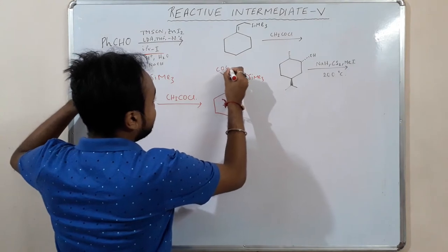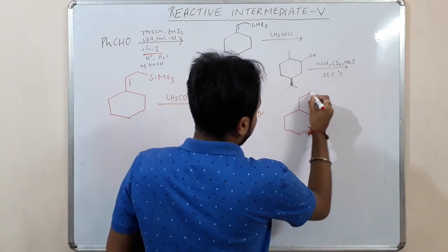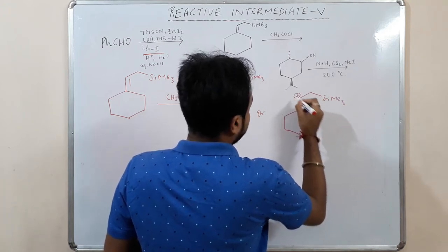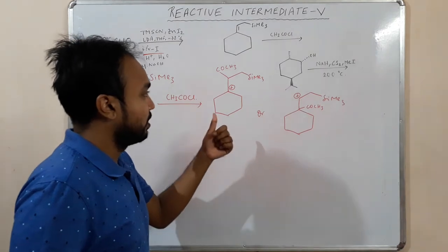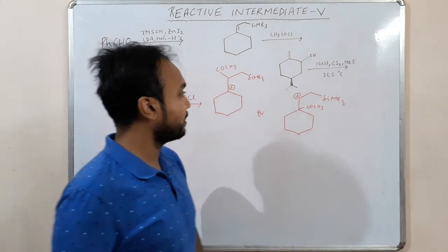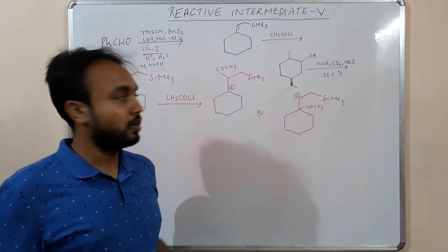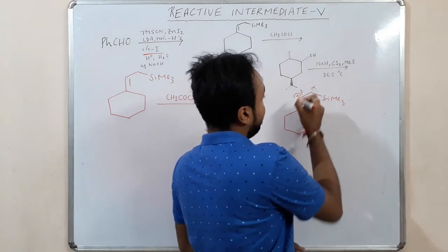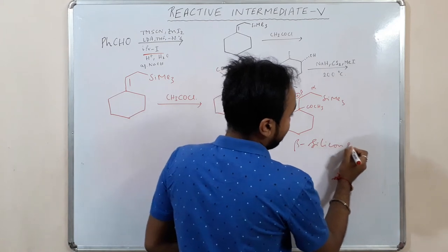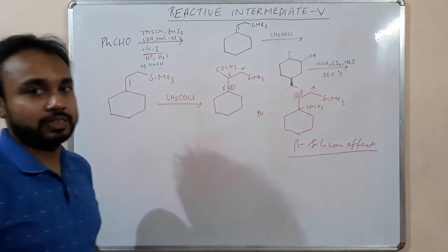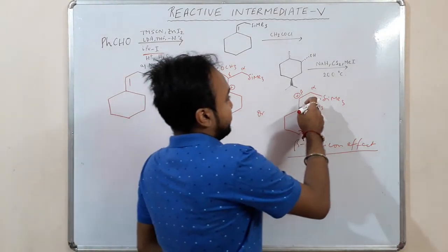There are two possibilities for where the carbocation forms. To understand which one is favored, consider the beta-silicon effect. If this is the silicon, alpha position is adjacent, and beta is one carbon further. A positive charge at the beta position relative to silicon is stabilized — this is the beta-silicon effect.